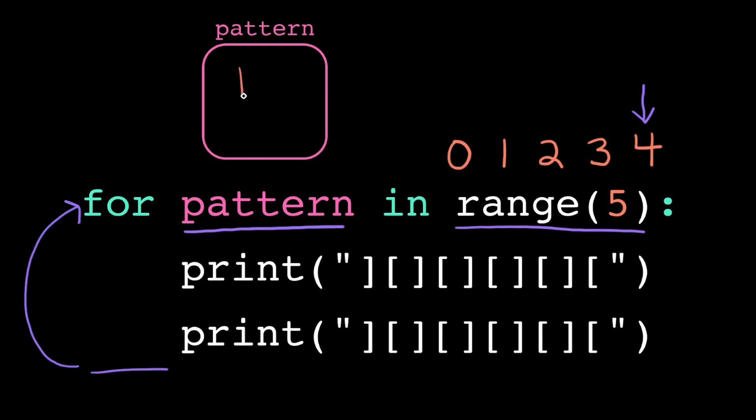We execute the loop body one last time and now when we loop back to the top, there are no more numbers in our range. So this tells the computer to terminate the loop. It skips the loop body and jumps execution to the next line of code outside of the loop.